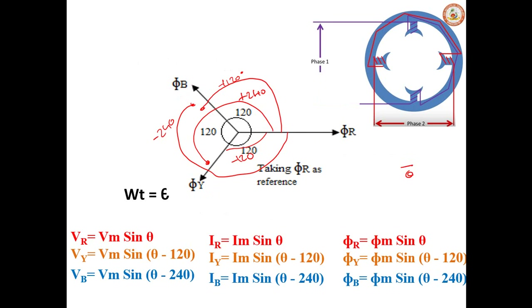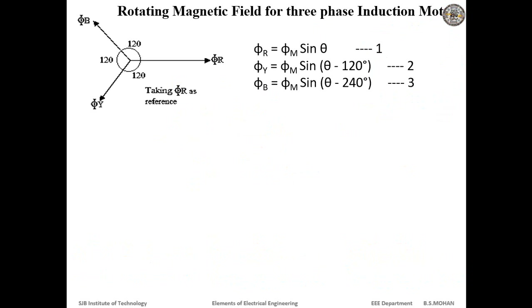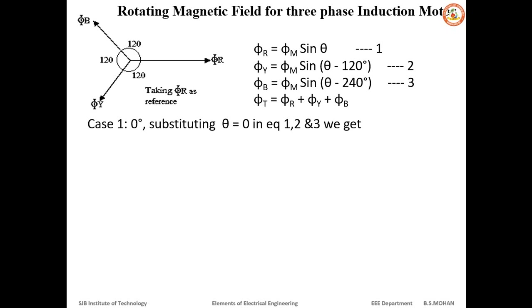Taking the three flux equations as φ_R = φ_M sin θ, φ_Y = φ_M sin(θ − 120°), and φ_B = φ_M sin(θ − 240°), each with a phase difference of 120°, the resultant flux φ_T is the summation of all three fluxes at any instant. Let's take three different cases.